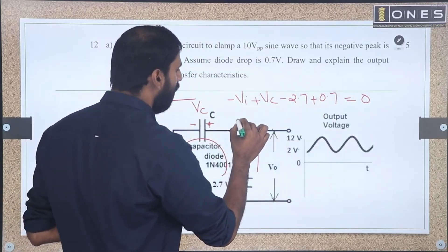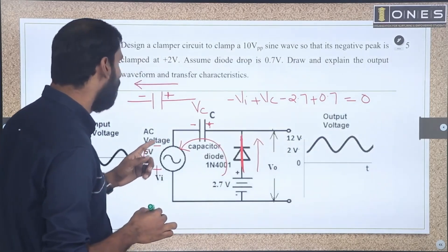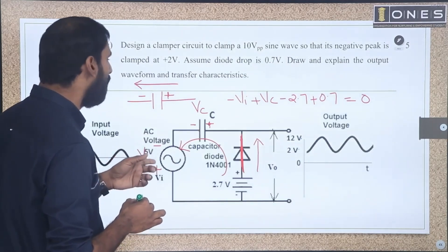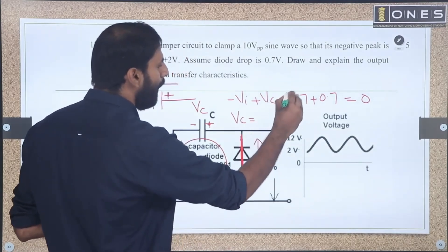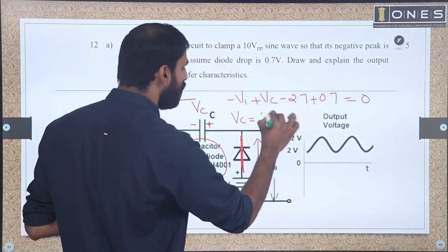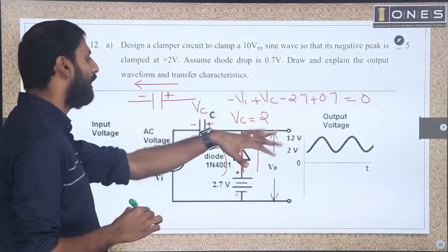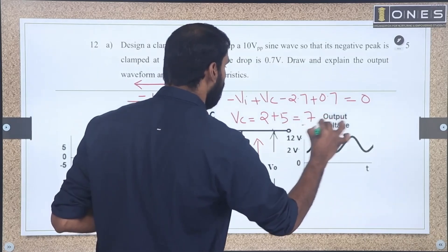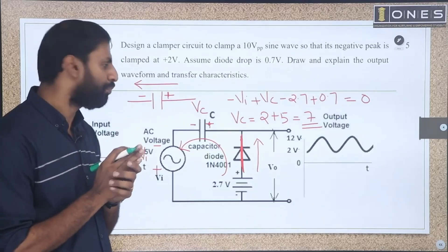So what is Vc from this expression? We will get Vc equals 7. So Vc is 7 volts. This completes the first step.